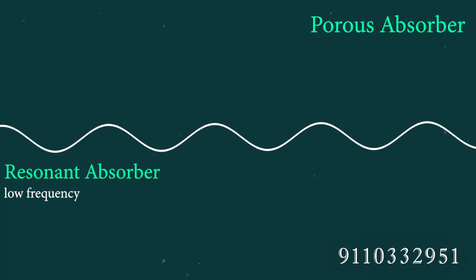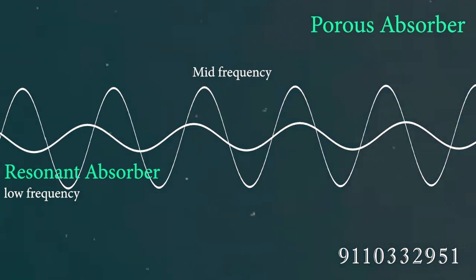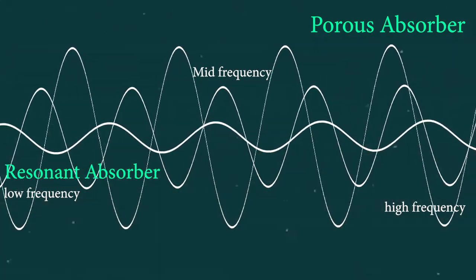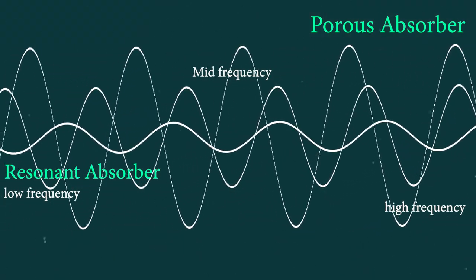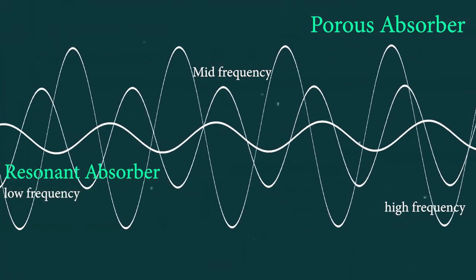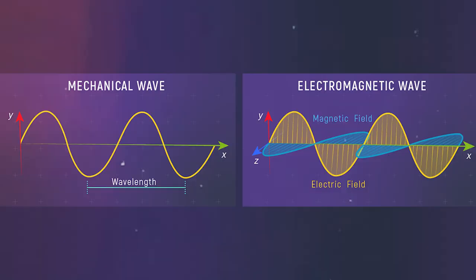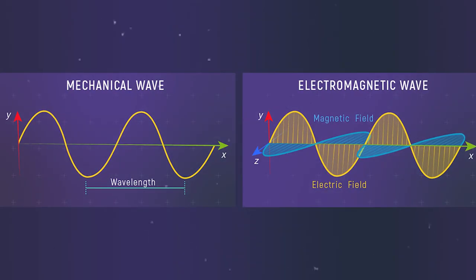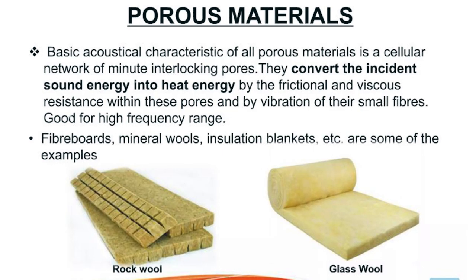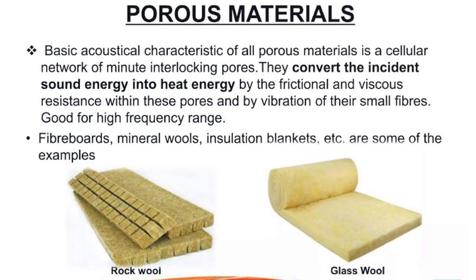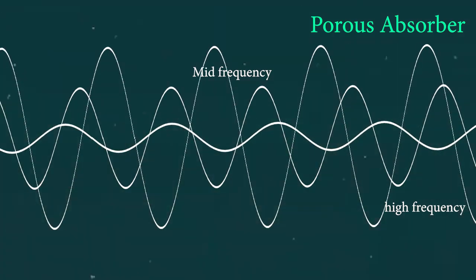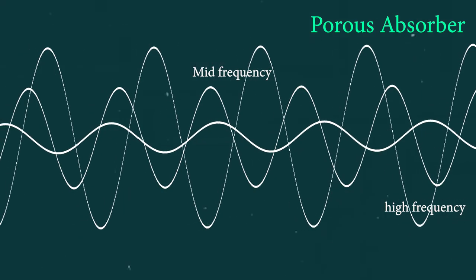Resonant Absorption is most useful in low-frequency areas. The Porous Absorber can be used in high-frequency areas. The Resonant Absorber generates sound energy and converts it to an electromagnetic wave. For Porous, you can absorb high-frequency and mid-frequency, and the baseline absorption will be able to flatten the frequency line.